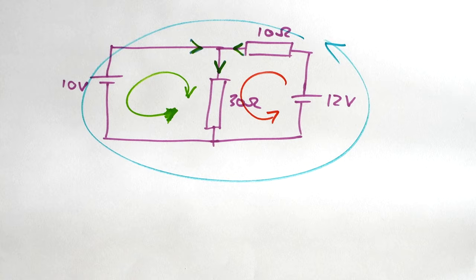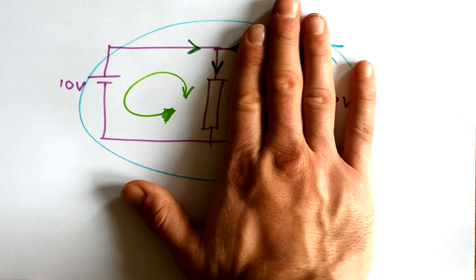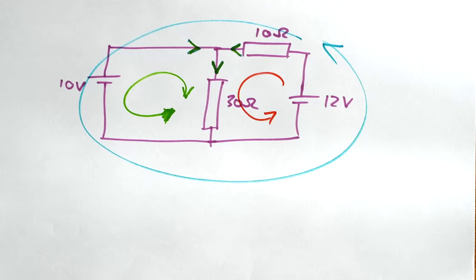But there is one thing that we know to be true. And that is that we have one loop here where we have a 10 volt battery, fine cell, it doesn't matter, 10 volt EMF, and we have one resistor. We know therefore that due to Kirchhoff's second law, that because we have a 10 volt EMF, the PD drop across this resistor must be 10 volts.